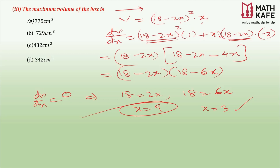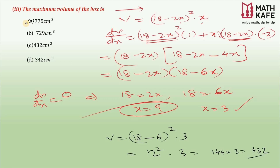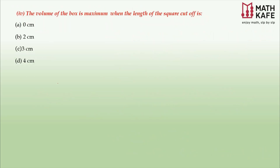So x = 3 is our valid answer. Substituting back to find the maximum volume: V = (18 − 2×3)² × 3 = (12)² × 3 = 144 × 3 = 432 cm³. That's the maximum volume of the box. Remember: never expand unnecessarily — factorizing saves significant time.